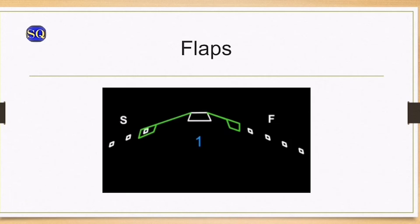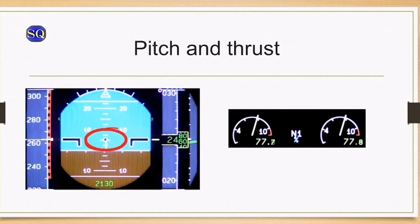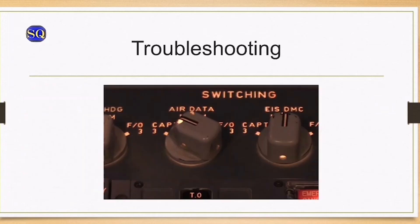Check that the actual slats and flaps configuration on the ECAM, since the flap auto retraction may occur. Adjust pitch in order to fly the required flight path. When target pitch is reached, adjust the thrust to target. When the aircraft flight path is stabilized, the crew can then problem solve.